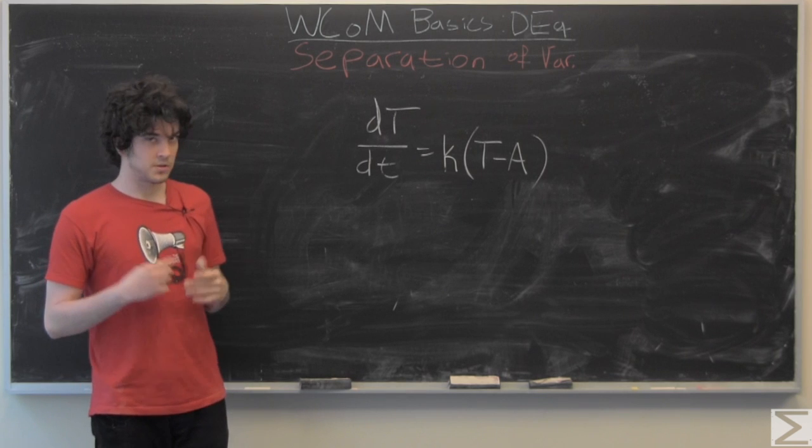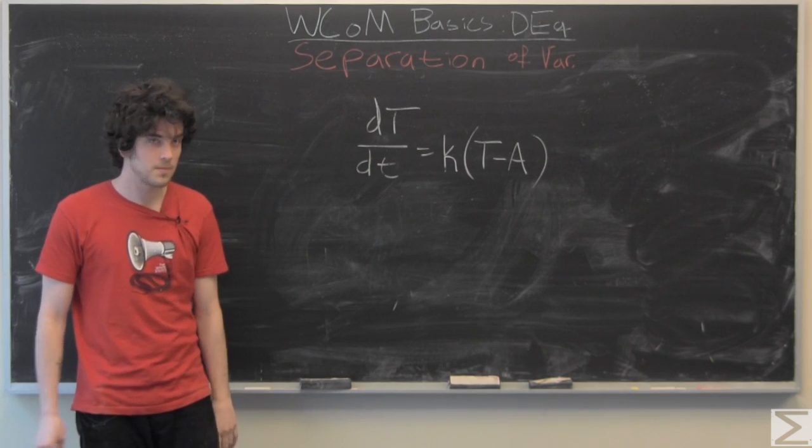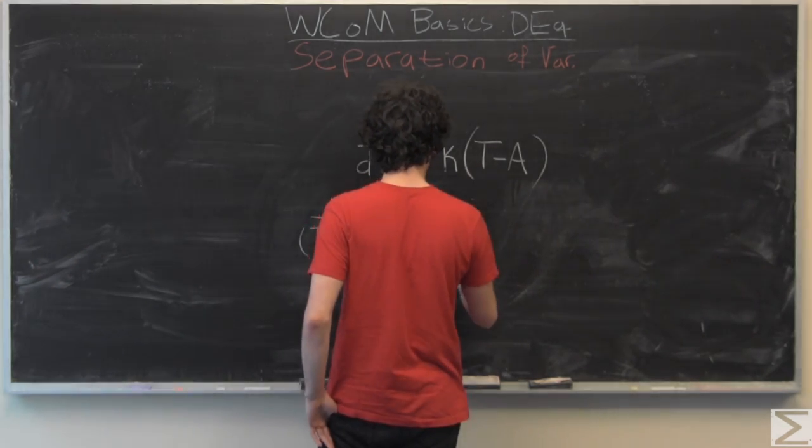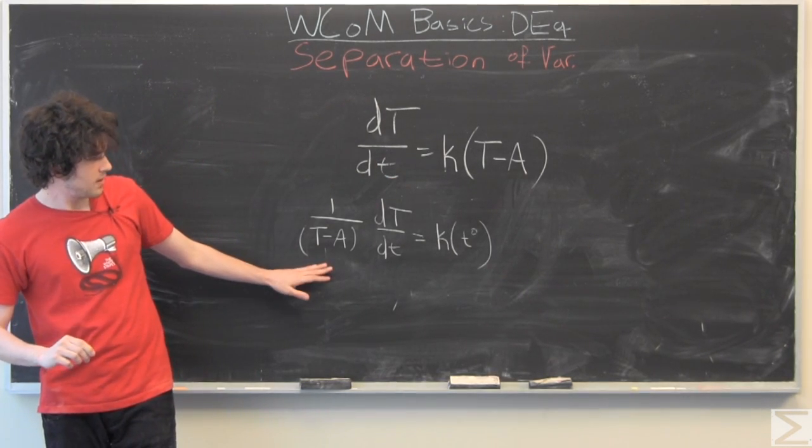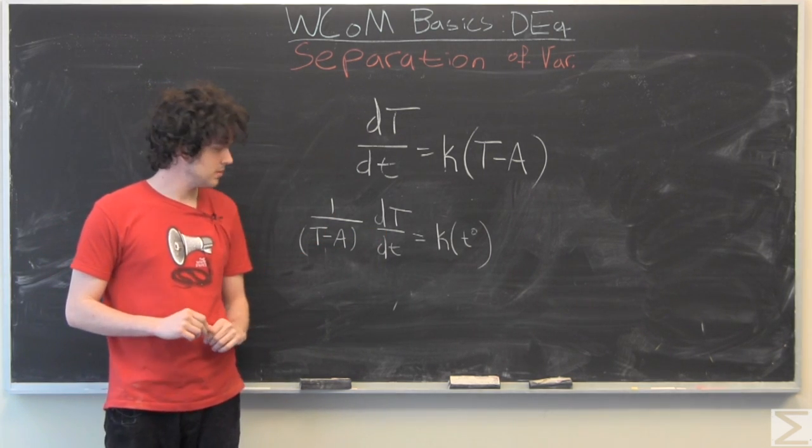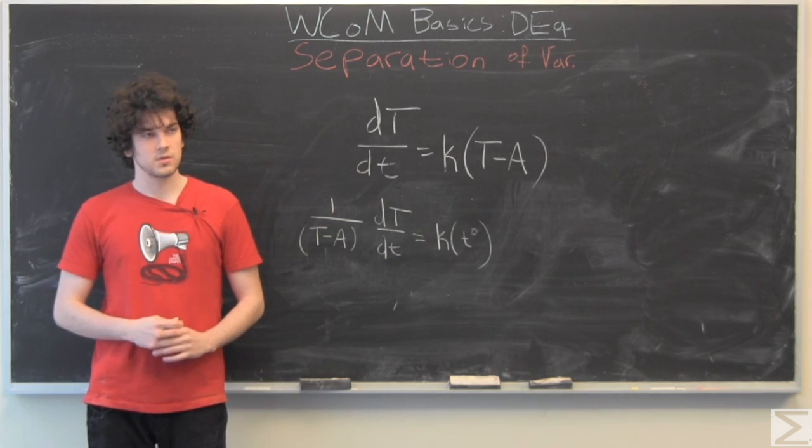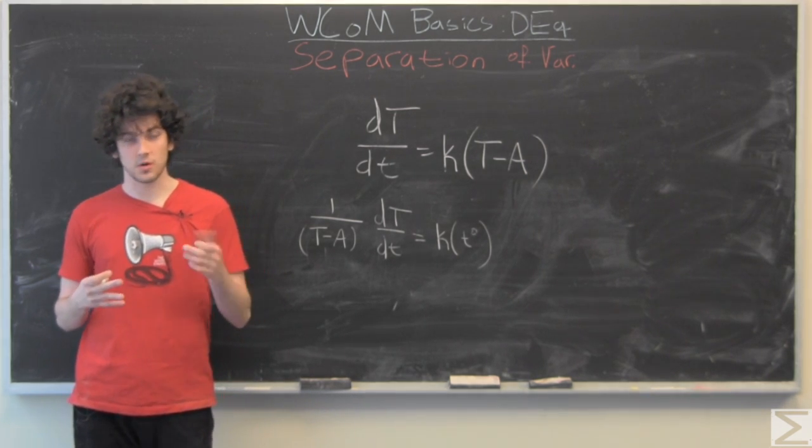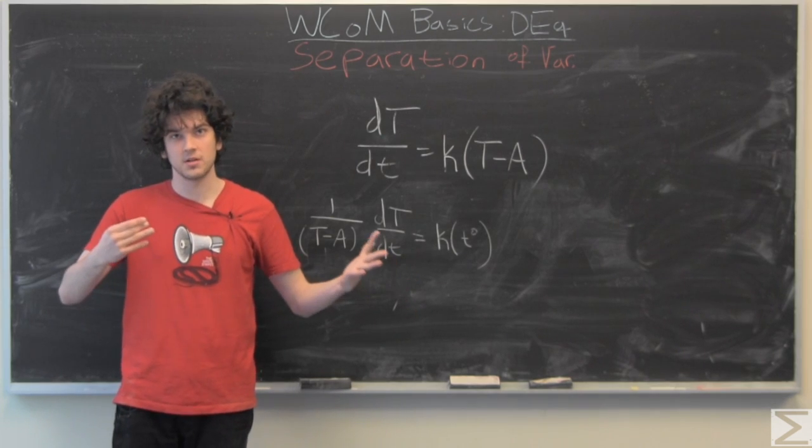So let's jump right in and solve for our temperature as a function of time. So we have one over T minus A times the derivative of temperature is equal to a constant, and the constant of course is multiplied by T raised to the zero power which is just one.